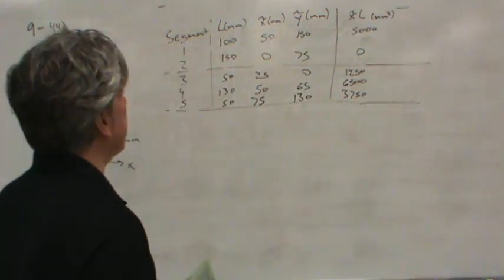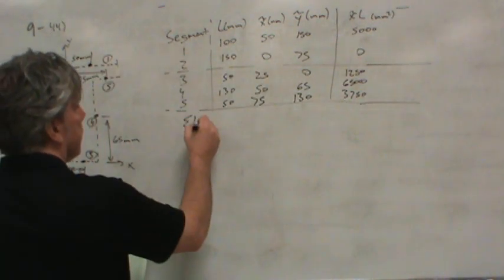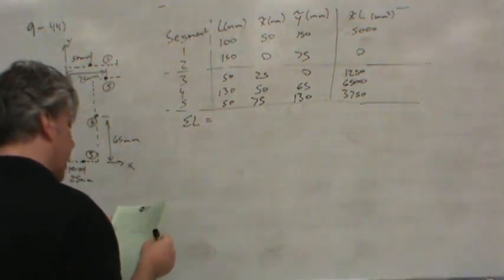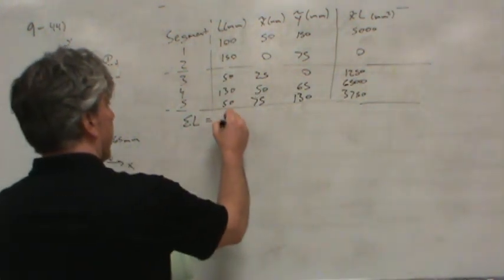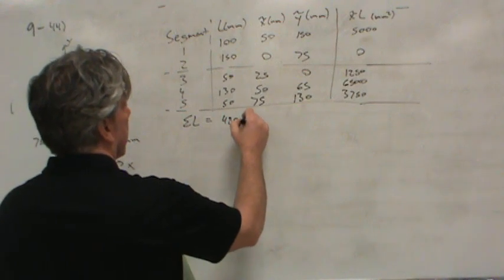Now one of the things we'll need to do is add up all of these. For example, we need the sum of the lengths, so we need to add this entire column. When we do that we get 480, of course the units are millimeters.